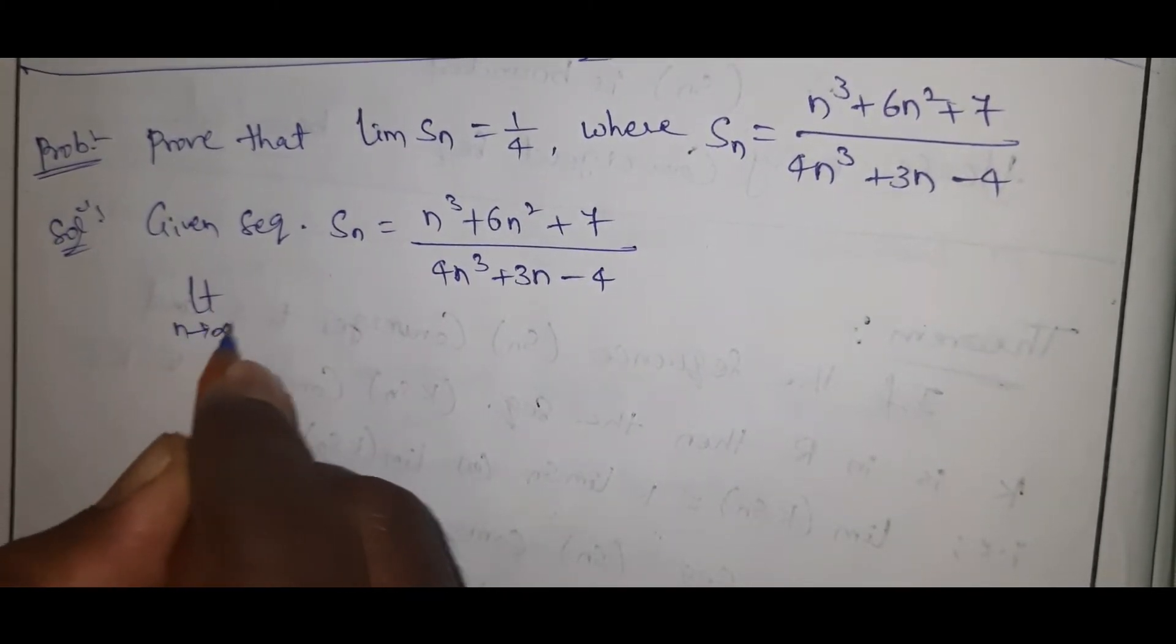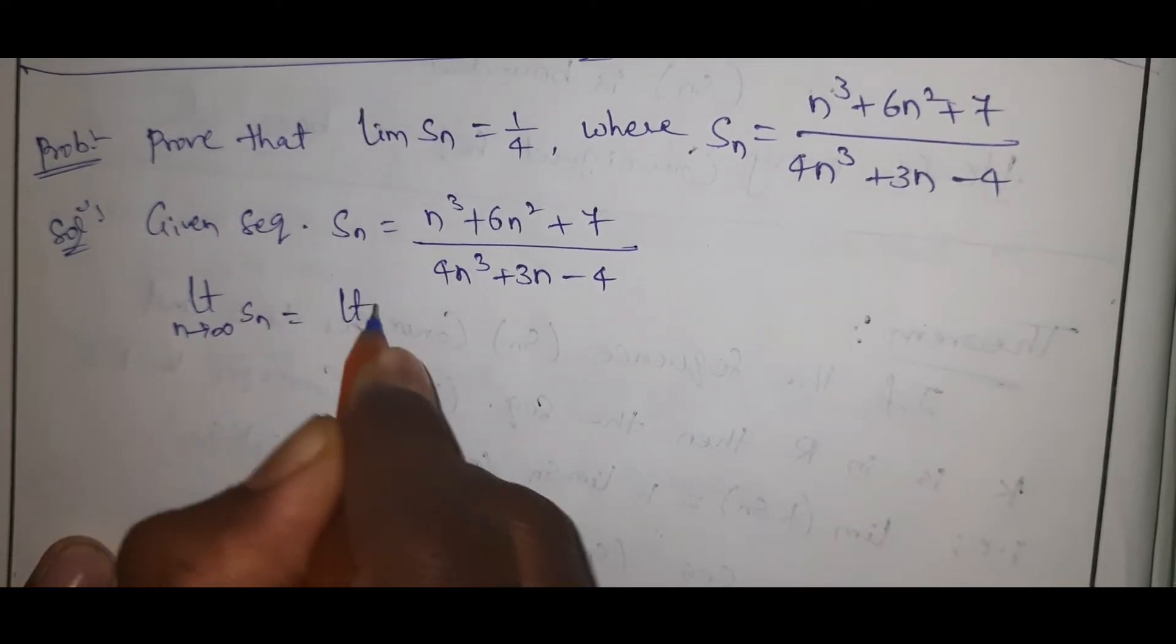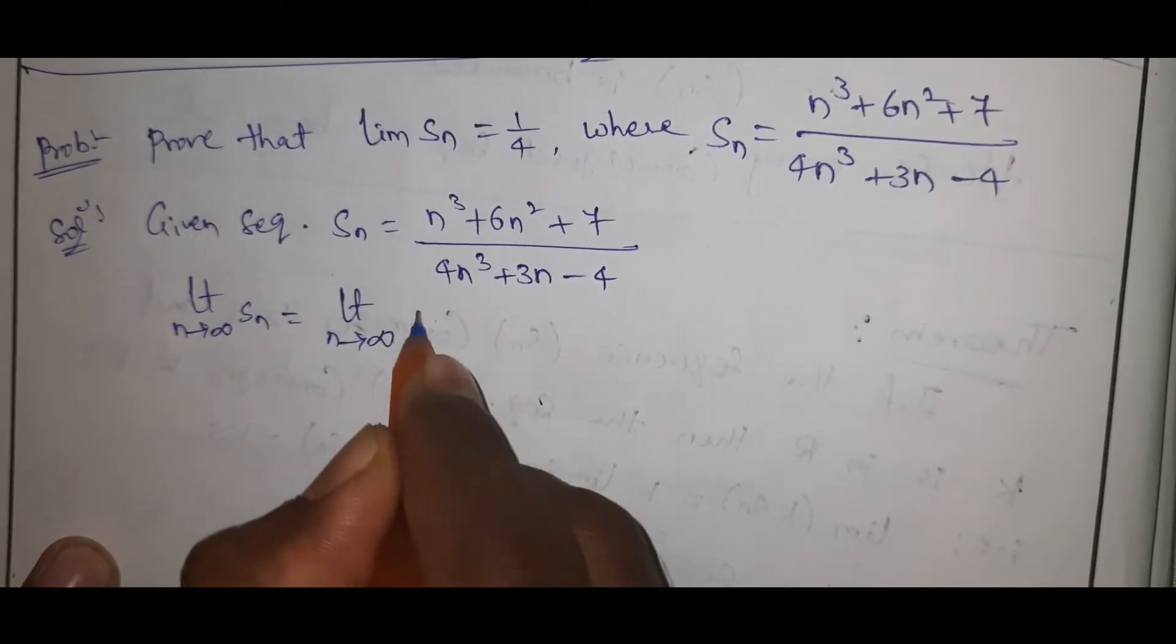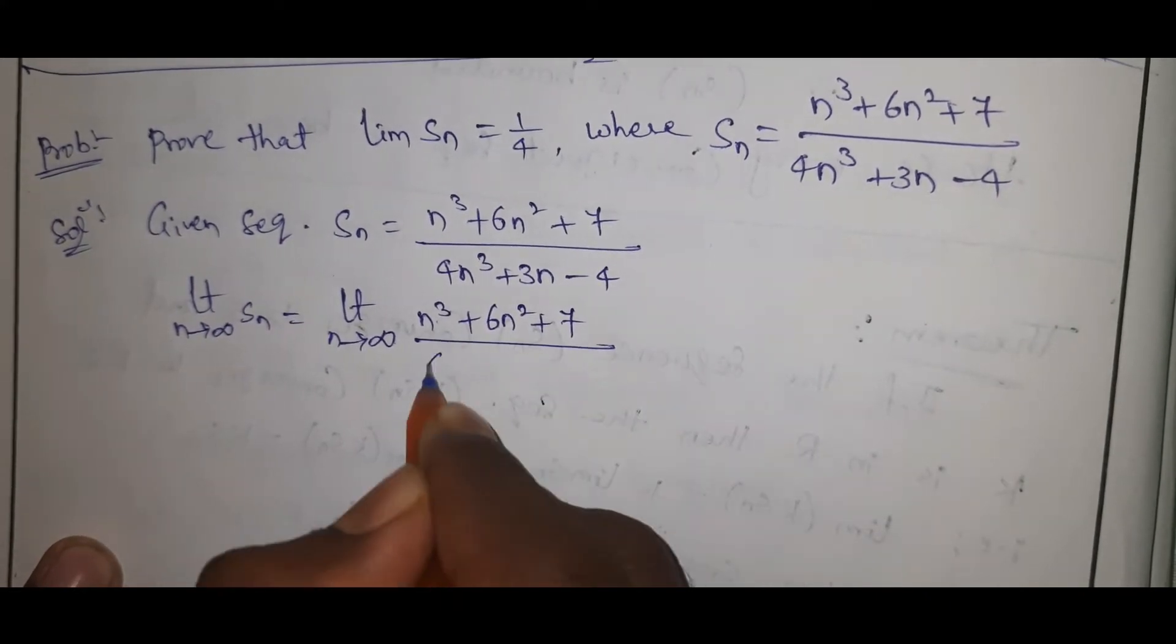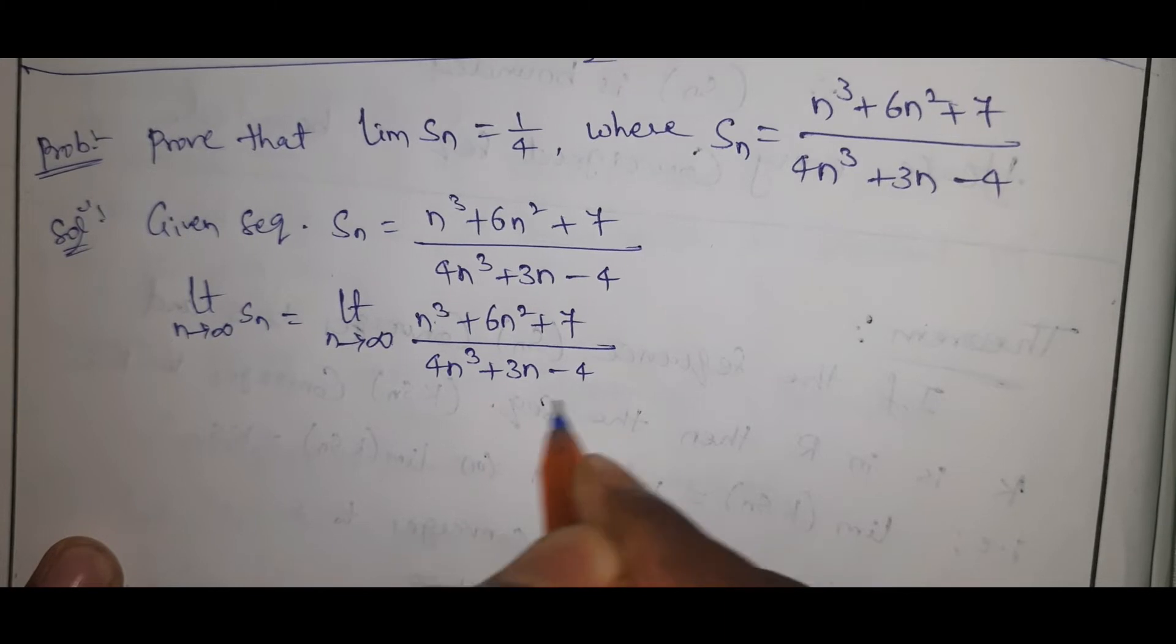Limit n tends to infinite Sn equals limit n tends to infinite n cube plus 6n square plus 7 by 4n cube plus 3n minus 4.